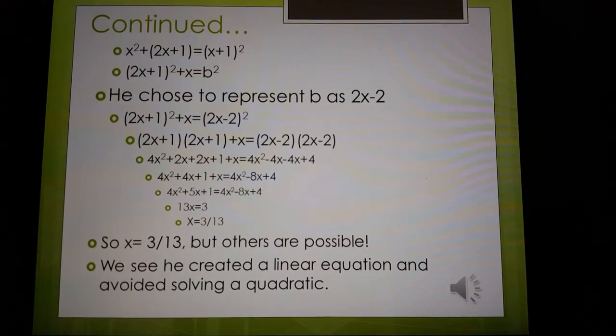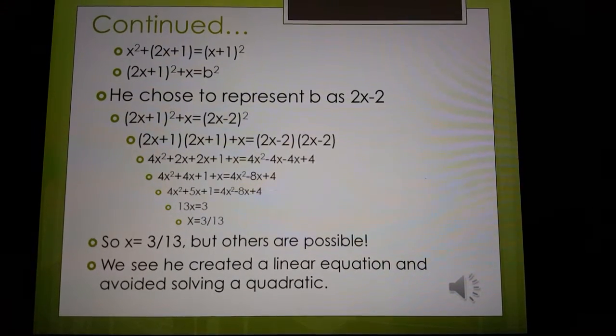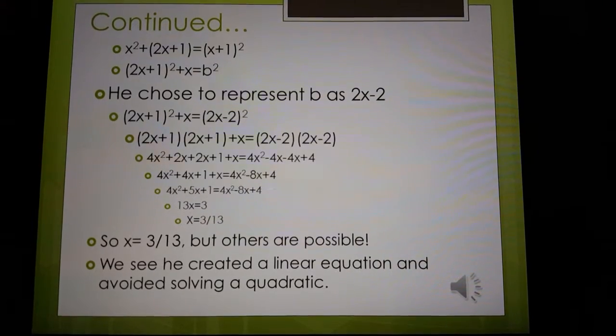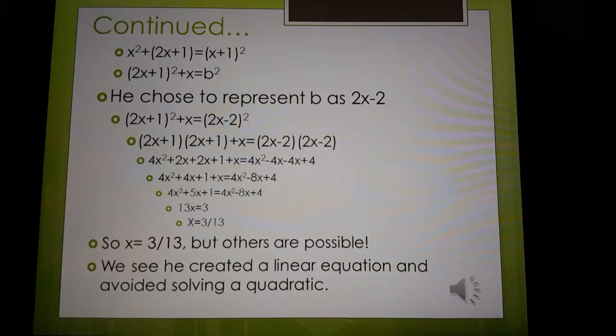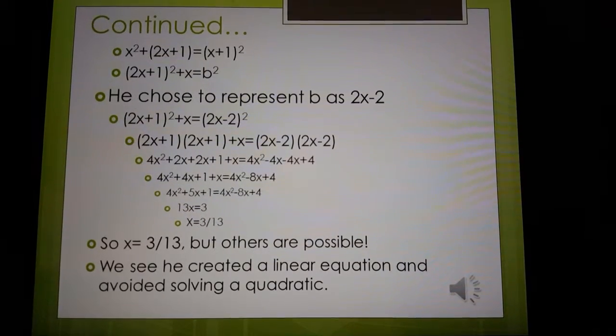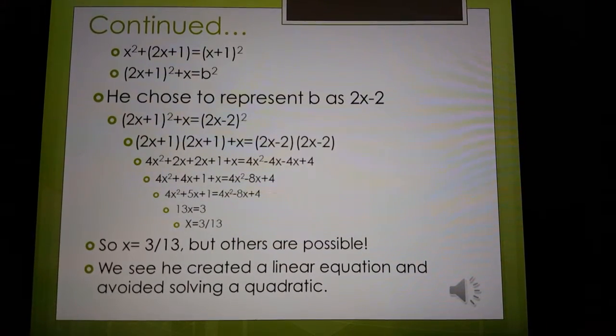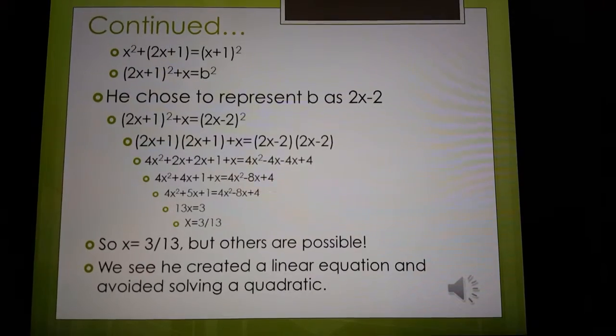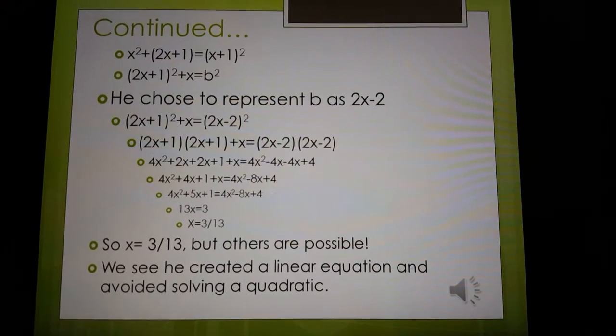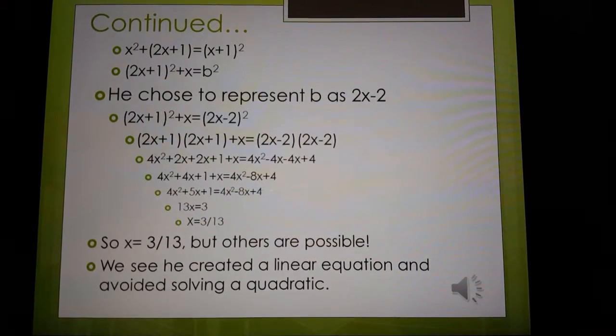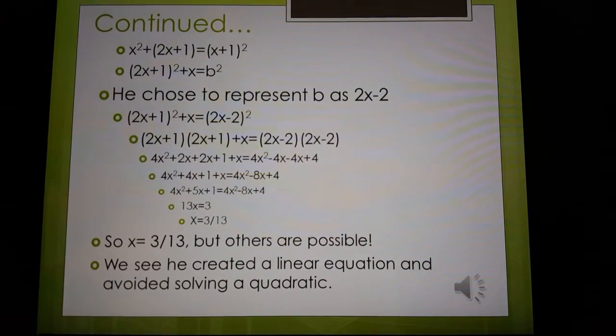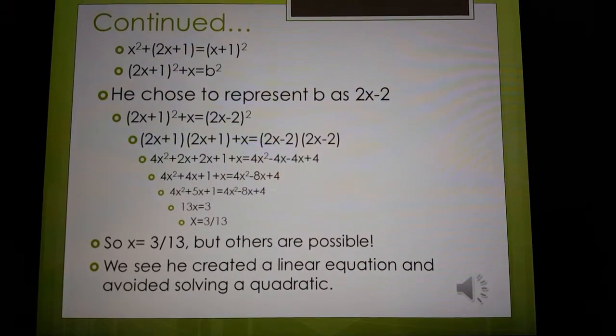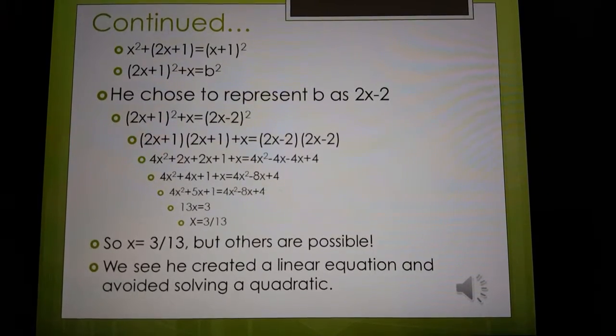So he chose to represent b as 2x minus 2. And if you plug that in, you get (2x+1) squared plus x equals (2x-2) squared. And you foil it out, go through the process, work your way down, and eventually you get x equals 3 over 13.